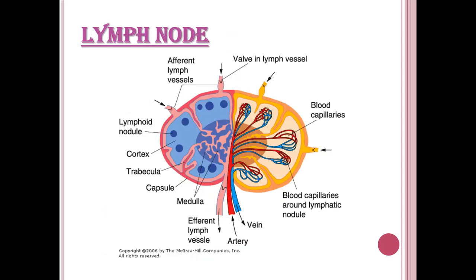The lymph node is a bean-shaped structure enclosed in a capsule. Just below the capsule is the subcapsular area; the peripheral area is the cortex and the central part is the medullary area. Multiple afferent channels around the convexity contain unidirectional valves allowing lymph to enter but not return — similar to a tire valve. After filtration, lymph exits through the hilum, which contains a vein going outside, arteries coming inside, and an efferent lymphatic vessel.